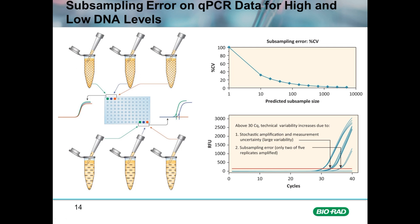However, when the samples are much less abundant, as shown by fewer dashed lines for target molecules, the amount of target taken from each sample can vary dramatically. In this particular pipette tip, several target molecules were taken up. However, in the second draw, fewer target molecules were taken, and in the third technical replicate, none of the target molecules were taken. This is called subsampling error.